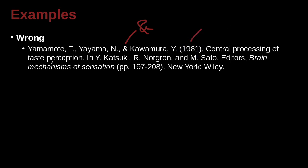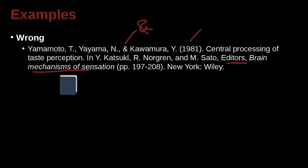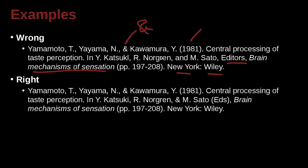Central processing of case perception — that's a chapter name or an article name. In this case it's inside of: Y. Katsuki, and R. Norgren, and M. Seto, editors. Brain mechanisms of sensation — that's the book name — New York, Wiley: that's the location and that's the publisher. APA is very clear about this: editors should be written as 'Eds.' inside parentheses. So we've got to remember that.